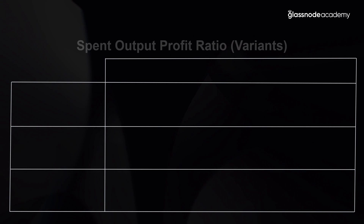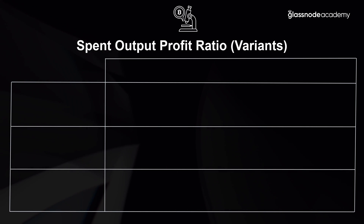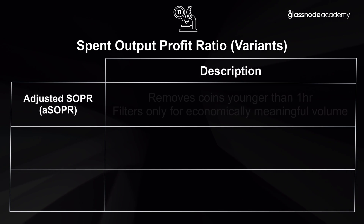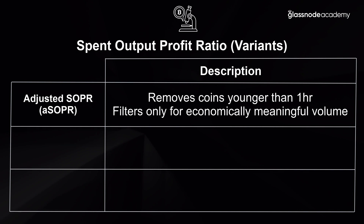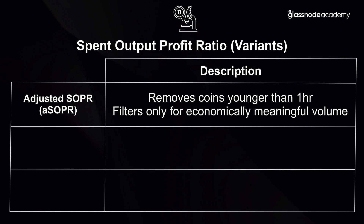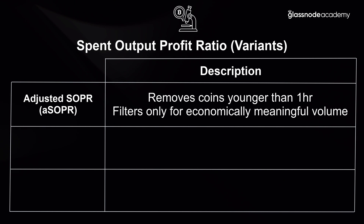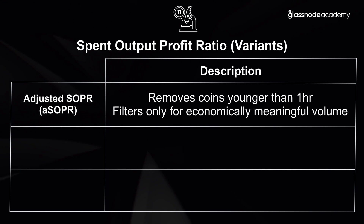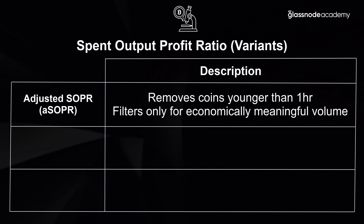Let's discuss the different variants of the Spent Output Profit Ratio. The first is the adjusted SOPR, which filters out all transactions that are younger than one hour — these generally represent intermediate hops between the origin and the eventual destination of coins. This provides a more economically meaningful view on overall spending patterns and thus an improved signal compared to the standard SOPR metric.